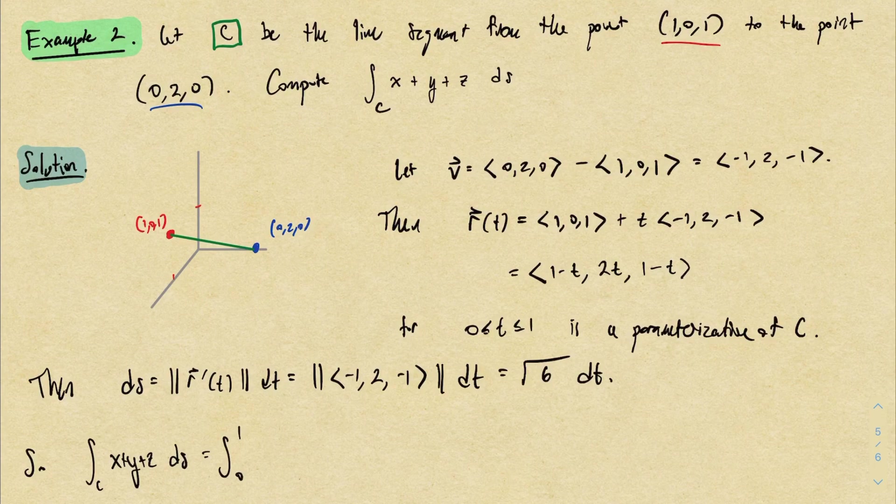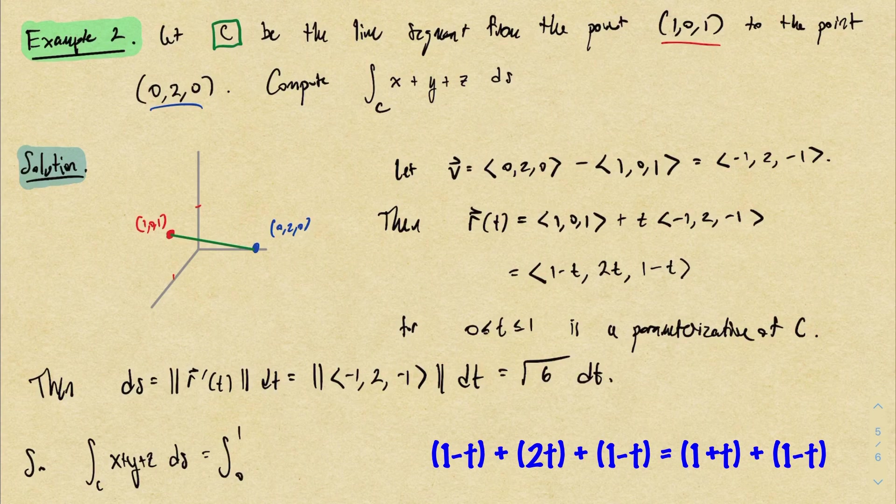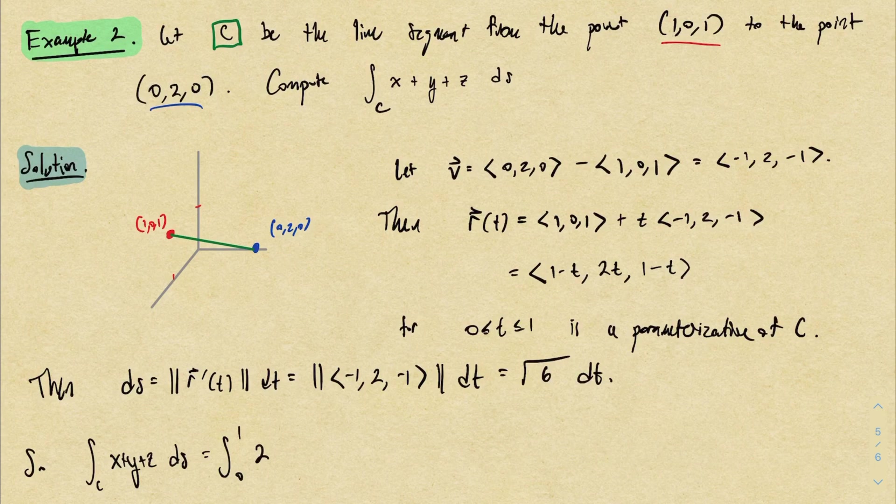And then we can convert the integral. Our bounds come from the parameter domain, so we get 0 to 1. And then x plus y plus z, look at the components of our parameterization. If I take x plus y, I would get 1 minus t plus 2t, which is 1 plus t. And then plus z, if I add 1 minus t, the t's cancel out, so we actually just end up with 1 plus 1 which is 2. And then multiply by DS, which is just root 6 dt.